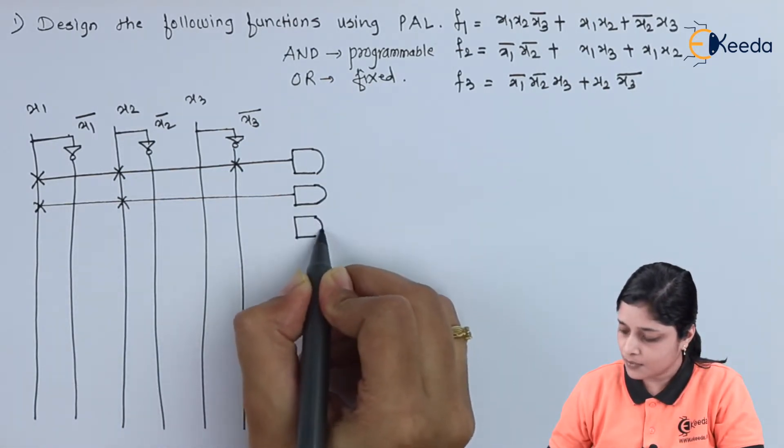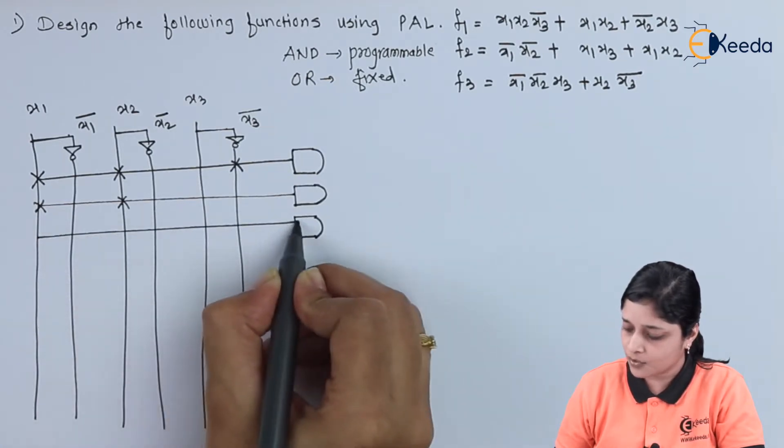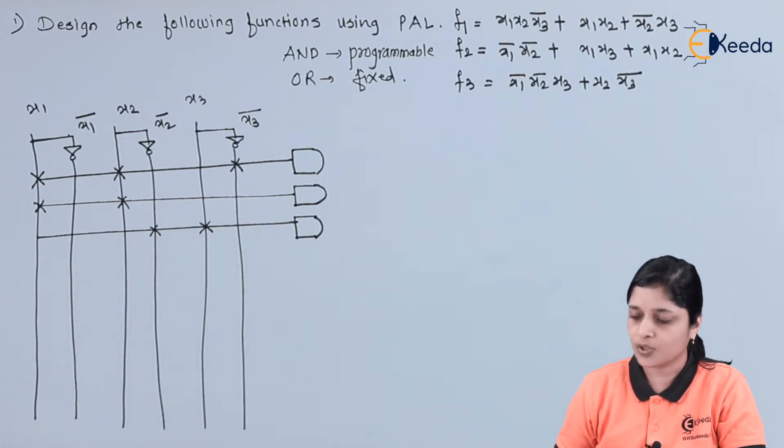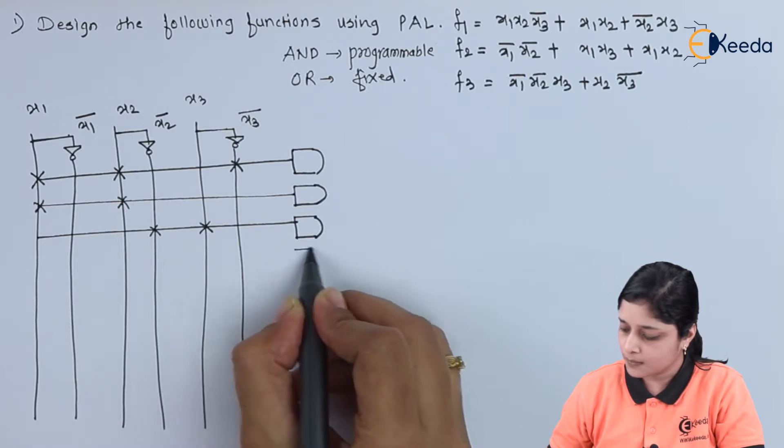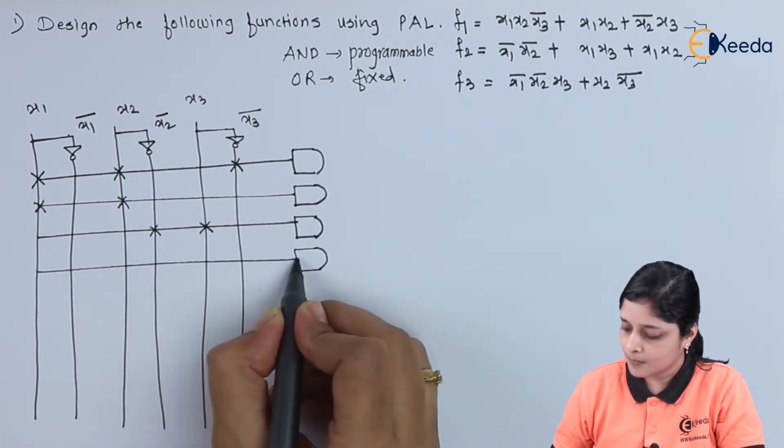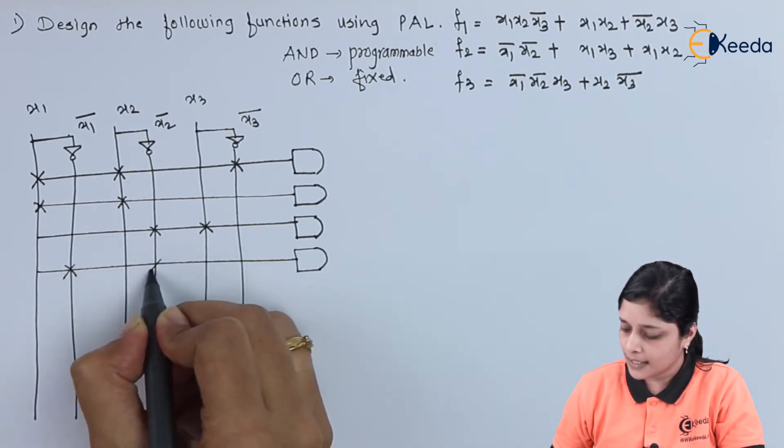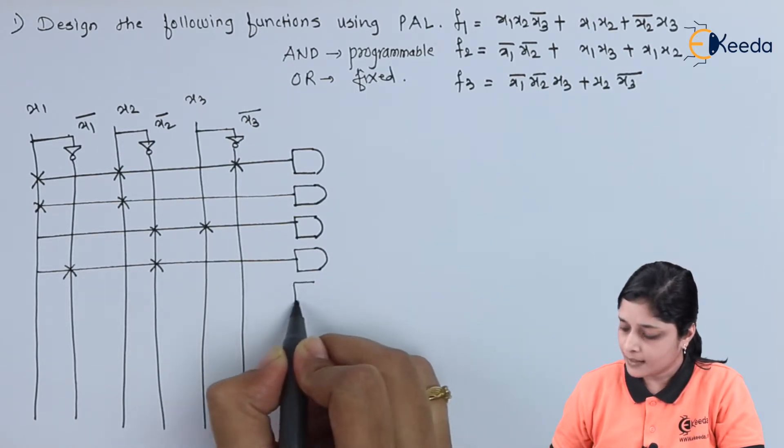After that, we will make x2 bar x3. So this is your x2 bar and x3. Now, next term is x1 bar x2 bar. So again we will draw one more AND gate. Here we will write x1 bar x2 bar.